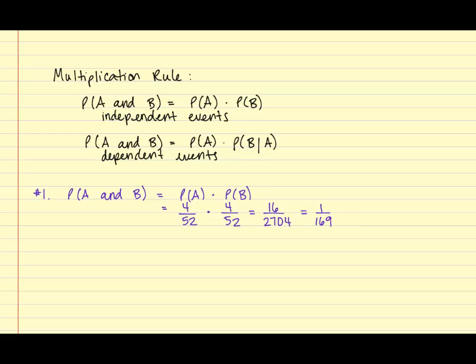The second problem states the cards are being drawn without replacement. Since the cards are drawn without replacement, the probability of the second event will be affected because it is being drawn from a deck with one fewer card. So instead of 52 cards, there are now 51 cards. Therefore, we will use the second formula: the probability of A and B is equal to the probability of A times the probability of B given that A has already occurred. We're going to select the king — there are four kings in the deck, so that's four out of 52.